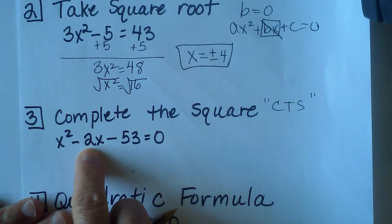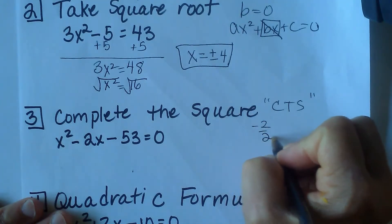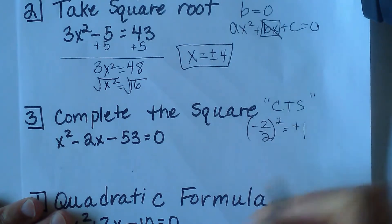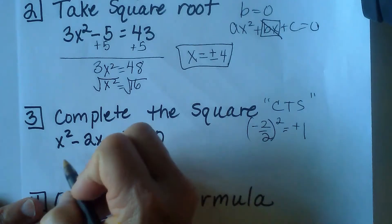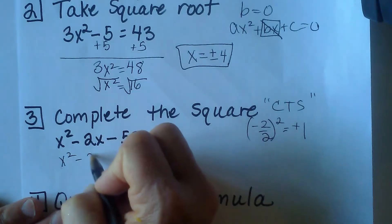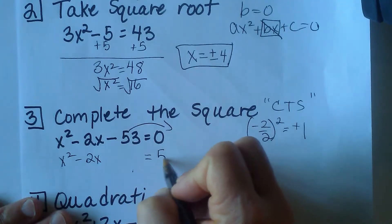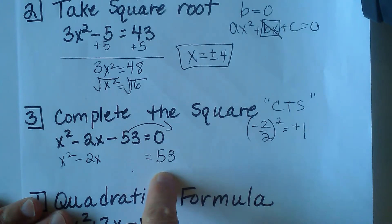We're going to half it, so take negative 2 and divide it by 2, and then we're going to square it. So that's going to give me a positive 1. First thing you want to do is you want to move this constant to the other side.